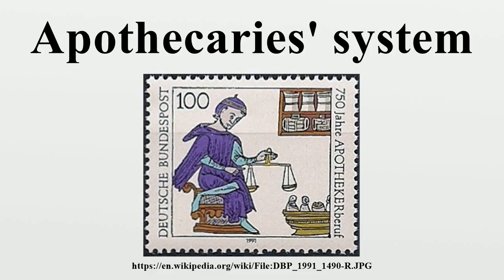The traditional English apothecary system of weights, as shown in the table, has the pound, ounce and grain being identical to the troy pound, ounce and grain. In the United Kingdom, a reform in 1824 made the troy pound the primary weight unit, but this had no effect on apothecary's weights. However, the Medicinals Act of 1858 completely abolished the apothecary's system in favor of the standard avoirdupois system.